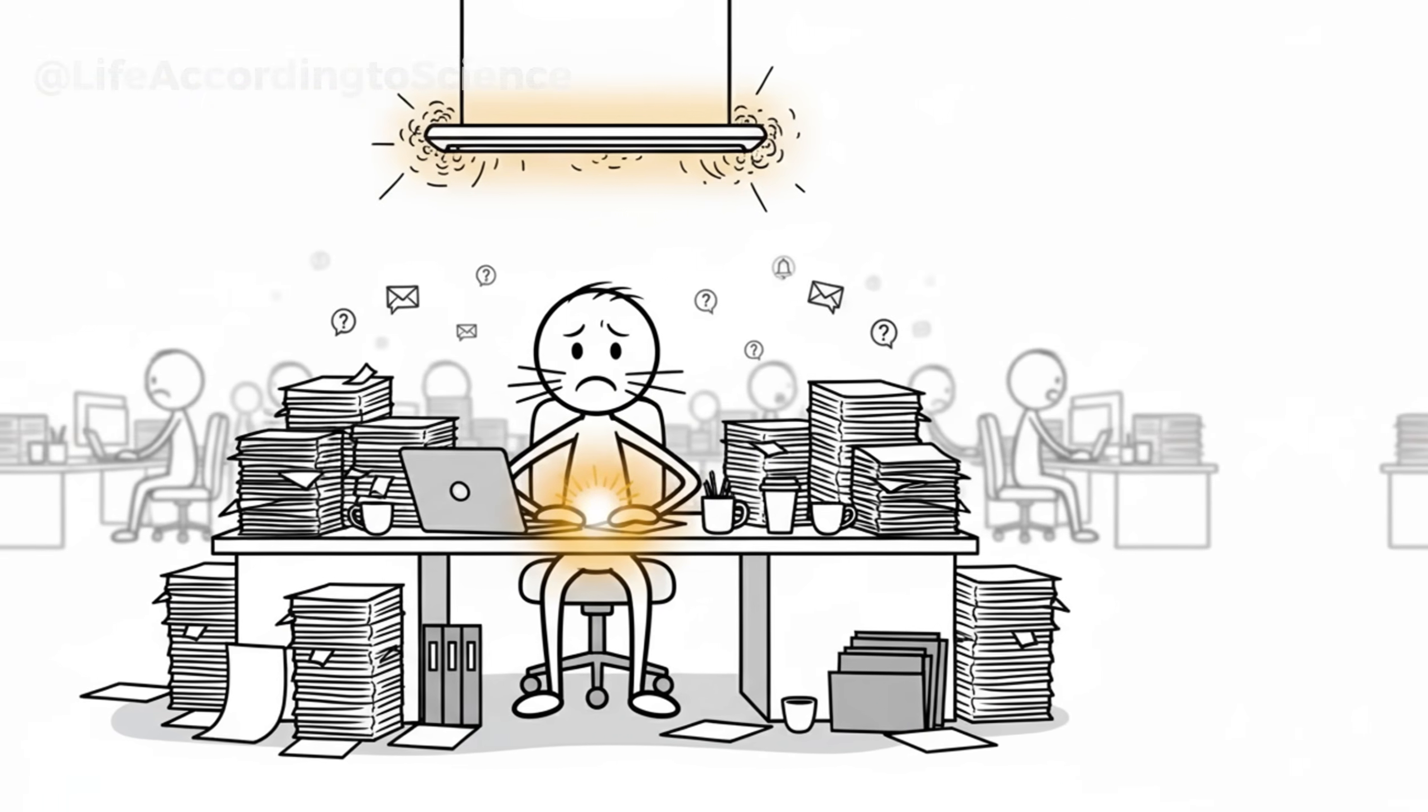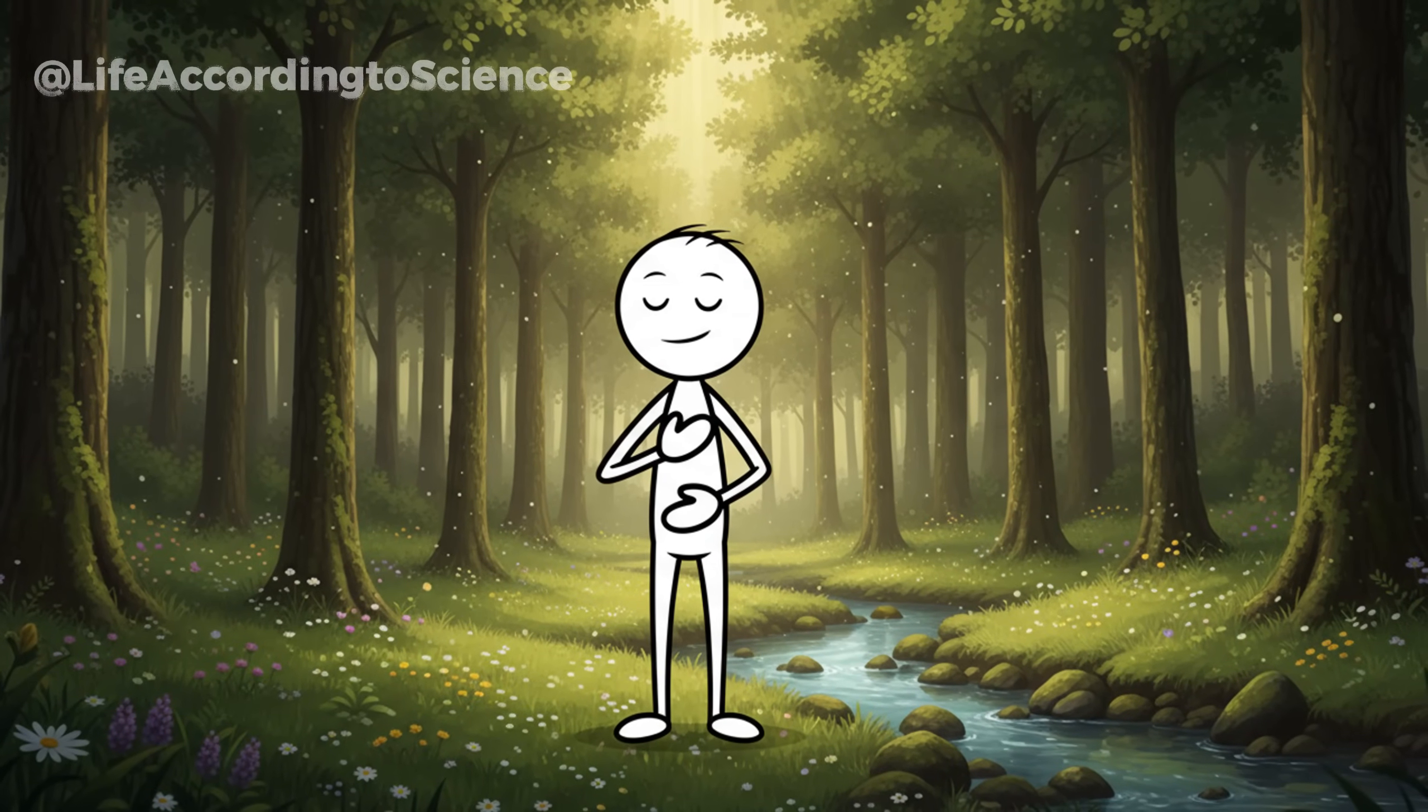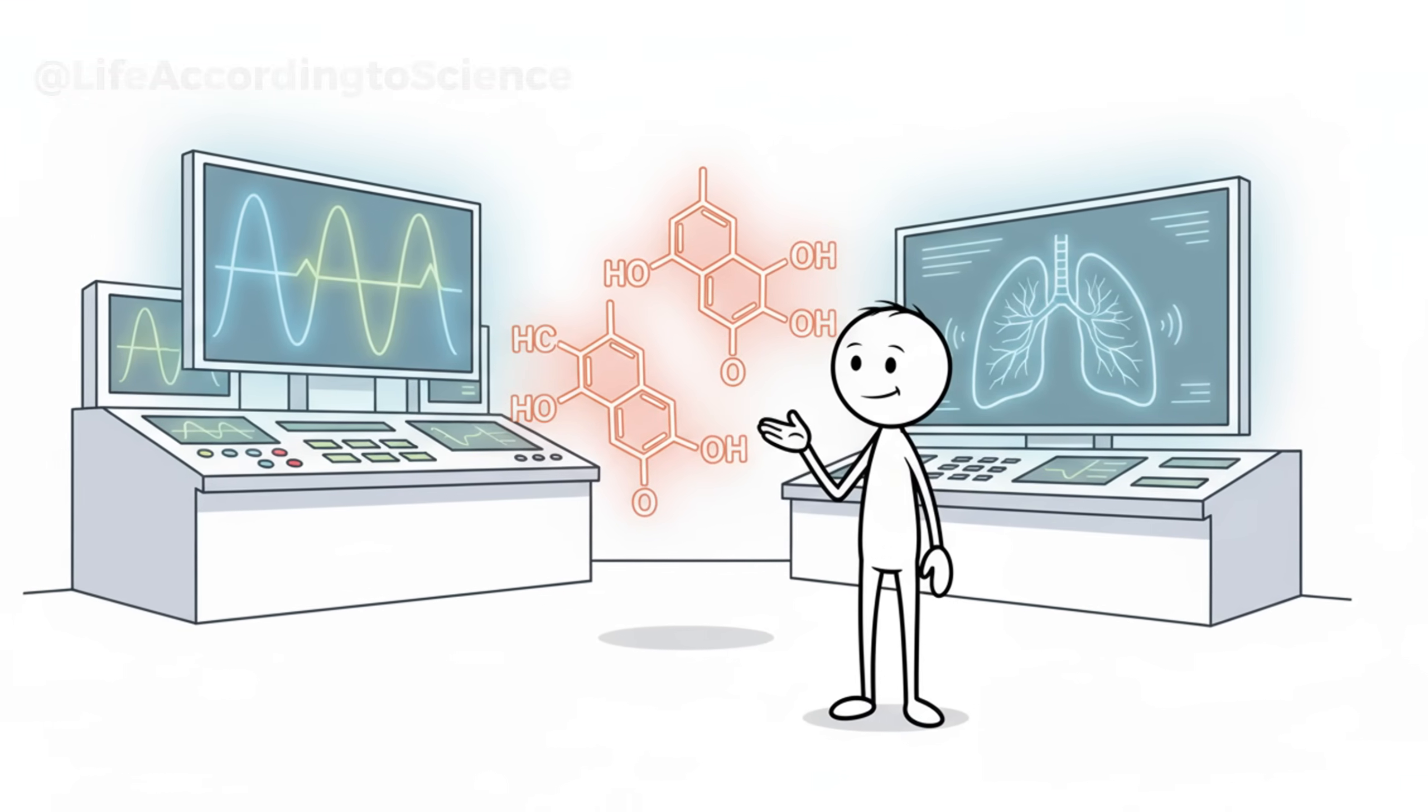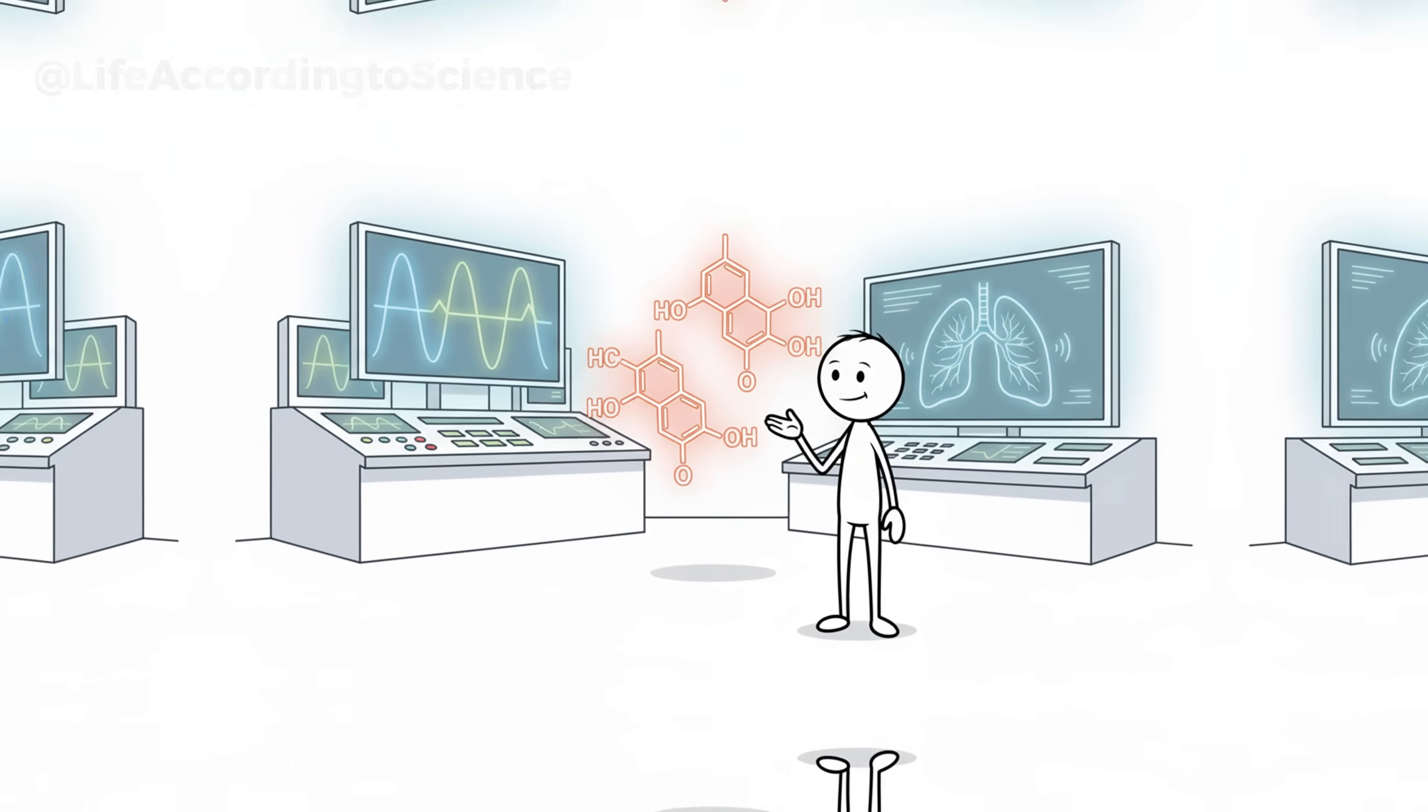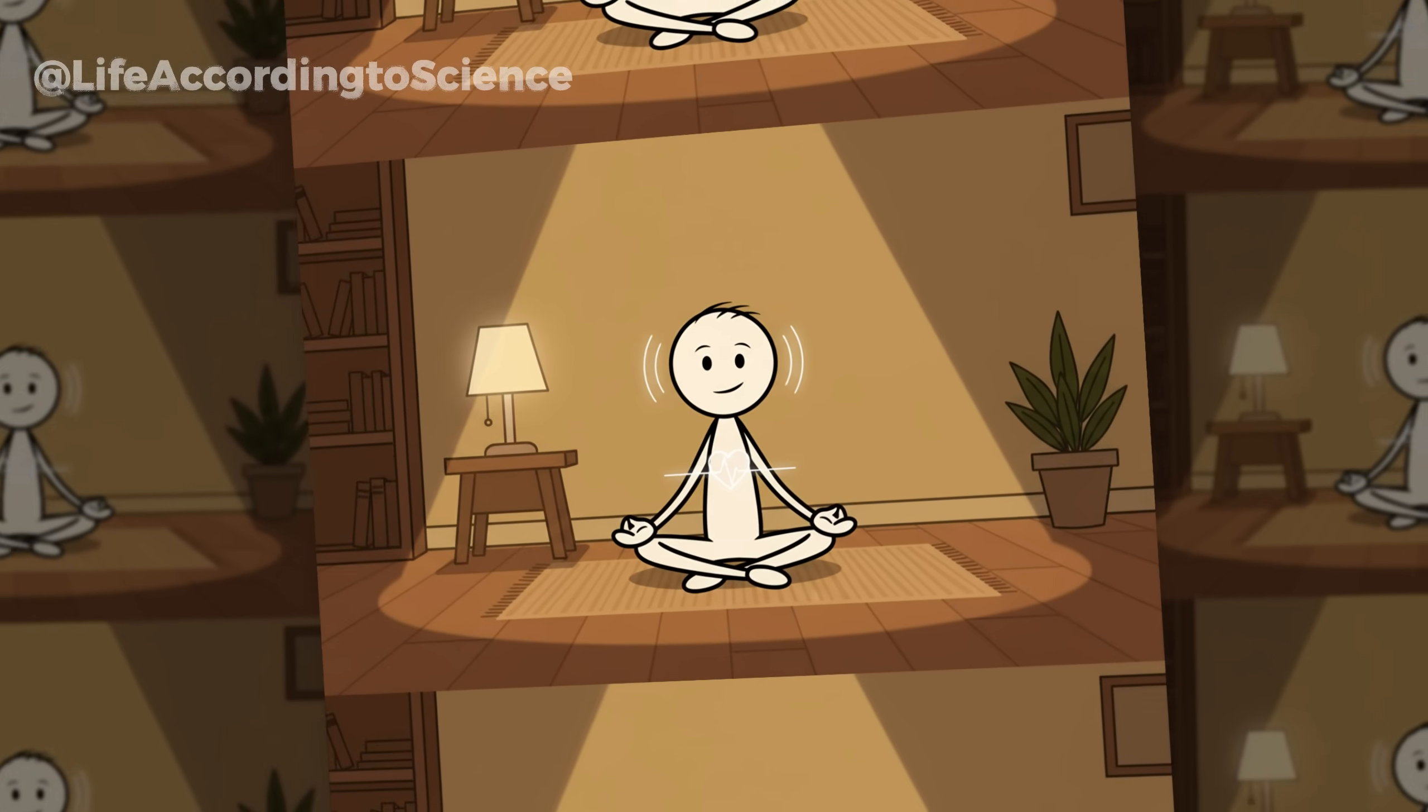Most people don't realize that the way they breathe shapes their metabolism. Fast, shallow breathing keeps your nervous system in a constant state of alertness, spiking cortisol and blood sugar. Slow, deep breathing does the opposite. It activates your parasympathetic system, lowering stress hormones, and improving oxygen delivery to tissues. A study from Harvard Medical School found that practicing slow diaphragmatic breathing for just 10 minutes a day can significantly reduce cortisol levels and improve insulin sensitivity. That's right. Something as simple as breathing correctly can literally change how your body processes fat.